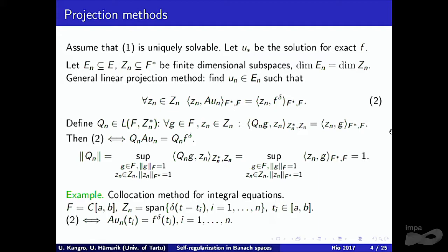For example, for the collocation method for integral equations, we might take for F the space of continuous functions, and for Z_N we take the span of delta functions. In equation 2, we may use those delta functions as the basis of this space. Then equation 2 can be written in the ordinary form of the collocation method.